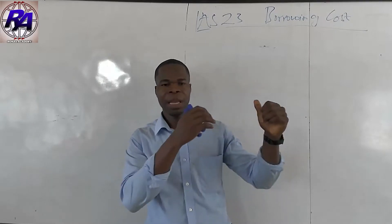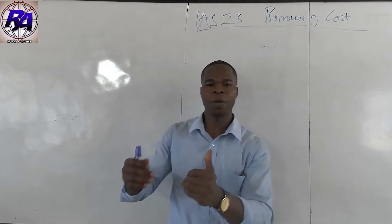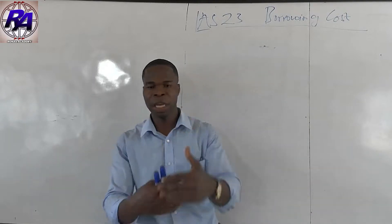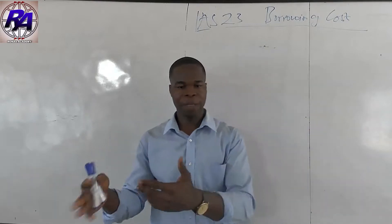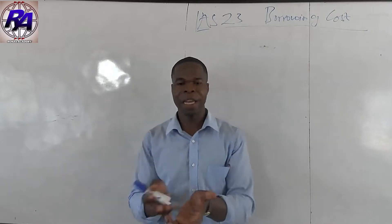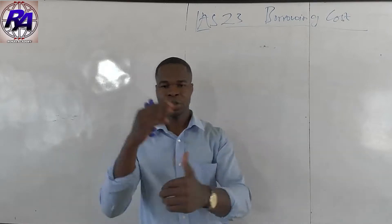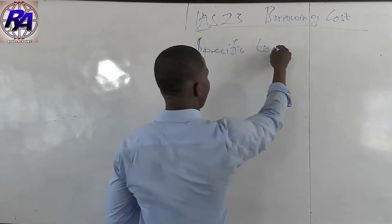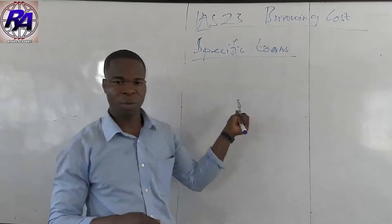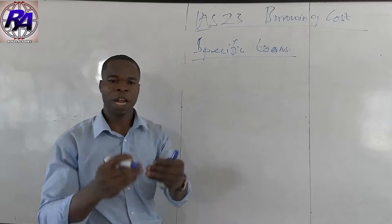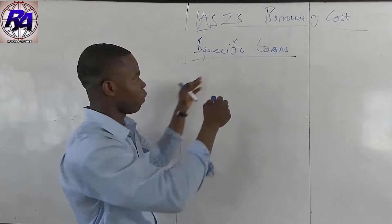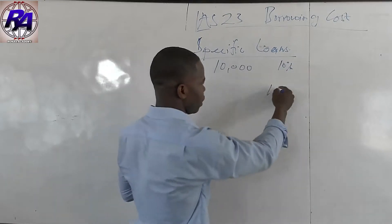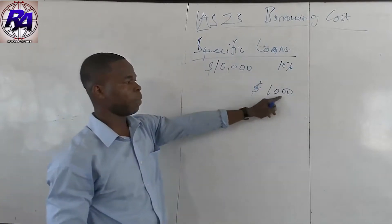Sometimes an entity will go for loans specifically for financing of an asset — these are specific loans. Sometimes they go for general loans, made up of more than one loan, to finance their item of property, plant and equipment or any qualifying asset. For specific loans, the costs to capitalize as part of the cost of the asset will be the interest on the loan. For example, assuming you took a $10,000 loan at 10% interest, the interest to capitalize would be $1,000.